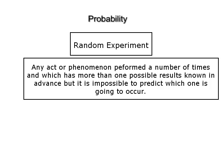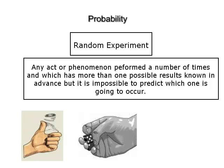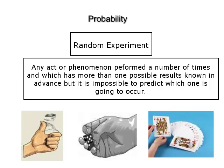To understand the concept of probability, let us define a few terms. Number 1: Random experiment. Any act or phenomenon which can be performed a number of times, which has more than one possible result known in advance, but it is impossible to predict which one is going to occur, is called a random experiment. For example, tossing a coin, throwing a six-faced die, or drawing a card from a well shuffled pack of 52 playing cards.